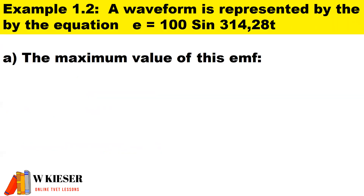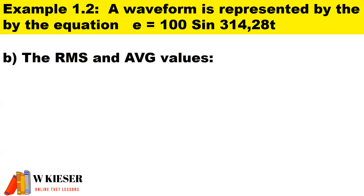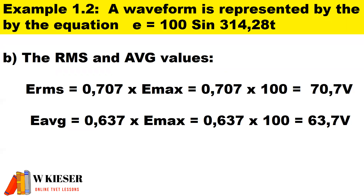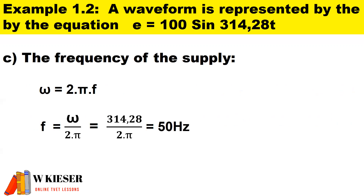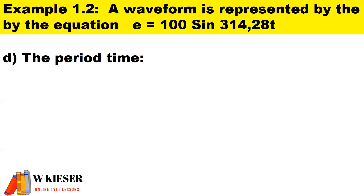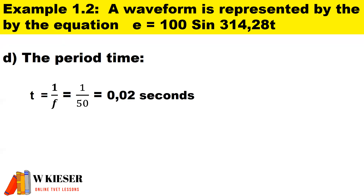From the given equation, the maximum EMF is 100 volts. The RMS value is 0.707 multiplied by 100, giving 70.7 volts. The average value is 0.637 multiplied by 100, giving 63.7 volts. To determine frequency: the angular velocity of 314.28 radians per second divided by 2π gives a frequency of 50 Hz. The period (time for one cycle) is one over frequency, giving 0.02 seconds.